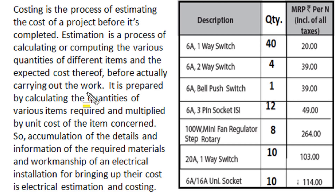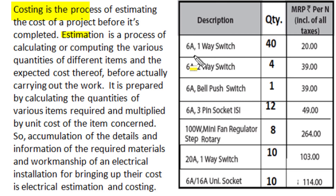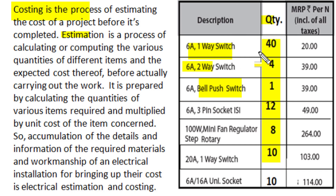Whether a project is a civil construction or an electrical installation, costing is the process of estimating the cost of that project before it is completed. In the costing process, we have to make estimation of different items which may be involved in project execution — not only the description of those items is planned, but what quantity will be used and what is the unit price of those items is also obtained.